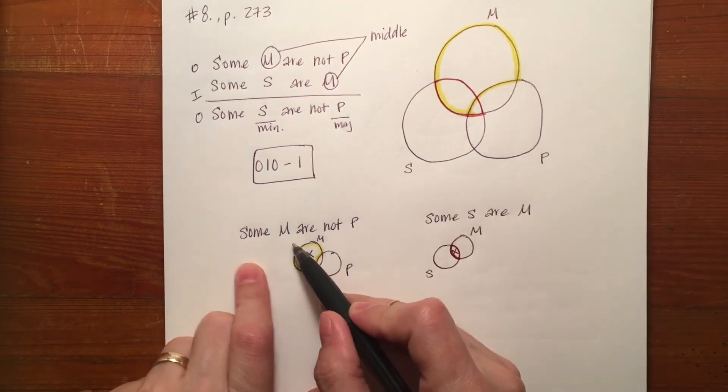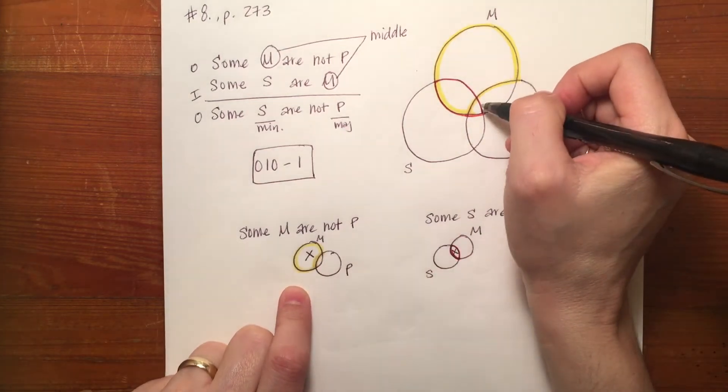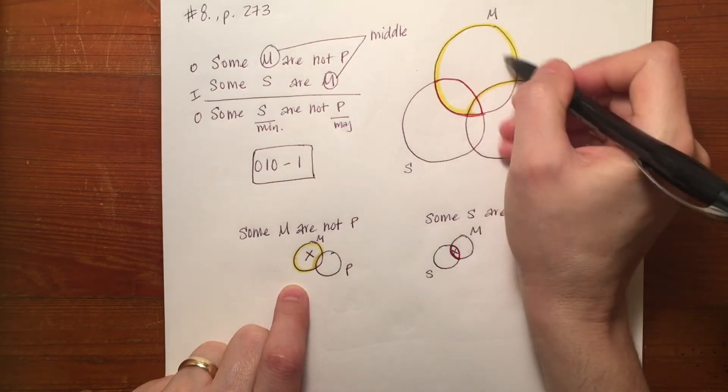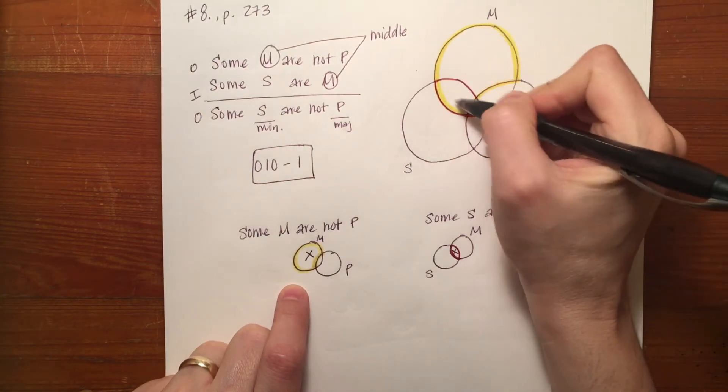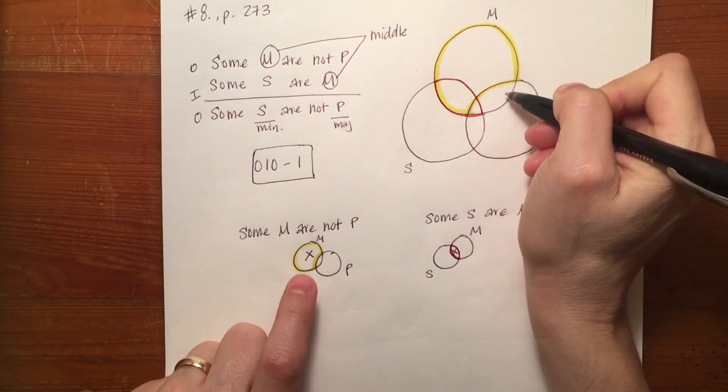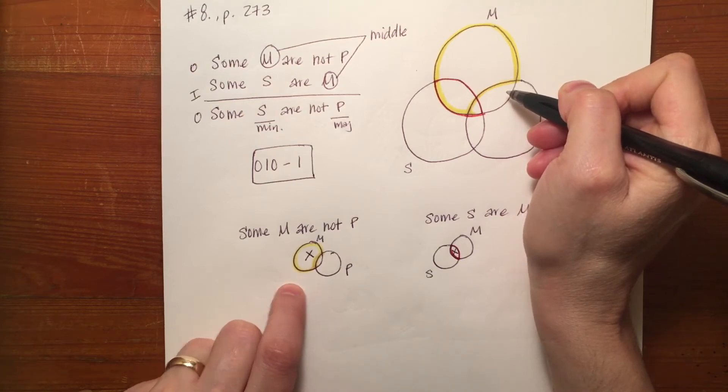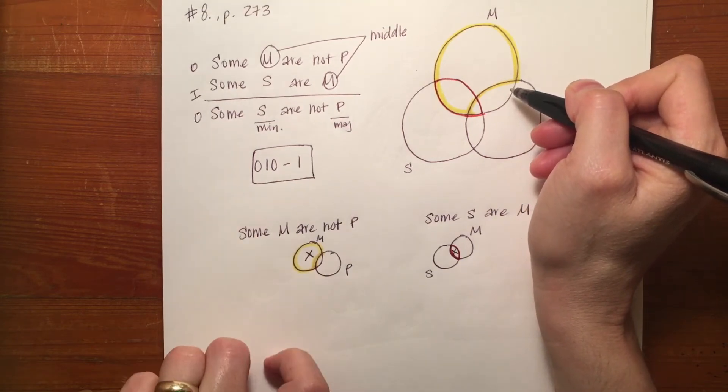So starting with some M are not P, I know that my answer has to go somewhere in this yellow highlighted area of M. In this larger part of M that corresponds to this larger part of M if I take these two circles alone.